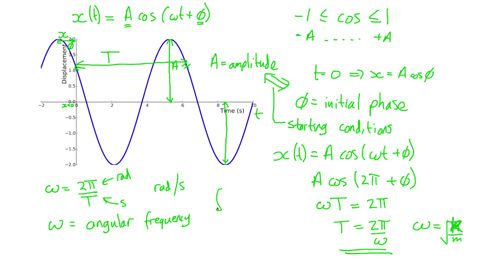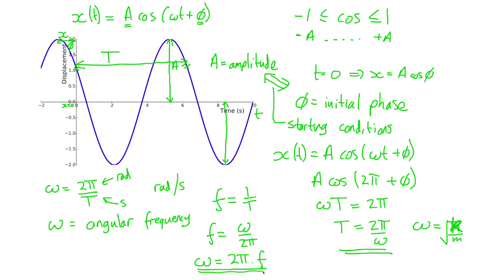The actual frequency of oscillation equals one over the time period — that's the number of oscillations per second. Using our equation, the frequency f equals ω over 2π, and therefore ω equals 2π times the frequency of the system. The frequency f is measured in hertz, which equals seconds to the minus one, while ω is measured in radians per second. Since 2π here is in radians, multiplying by frequency in per-seconds gives radians per second, which is consistent in terms of units.